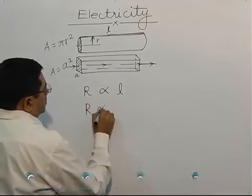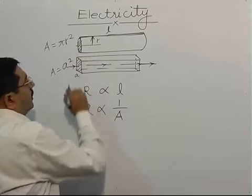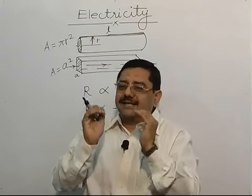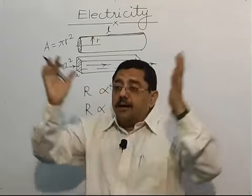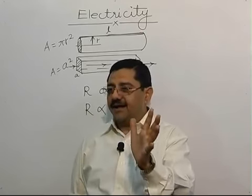This resistance is inversely proportional to cross sectional area of the conductor. More is the area, less is the resistance. Less is the area, more is the resistance. The resistance, did you understand? No? Okay.